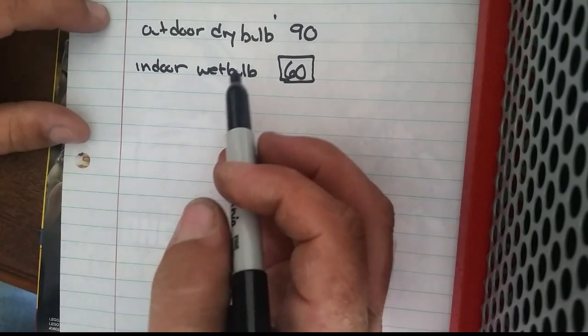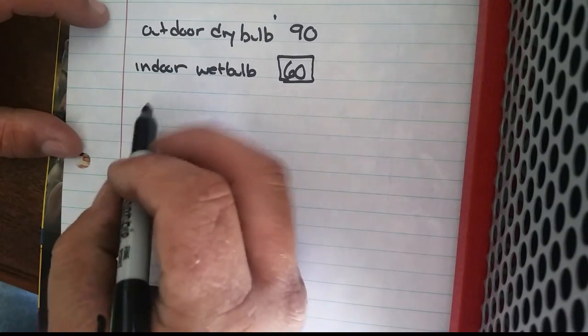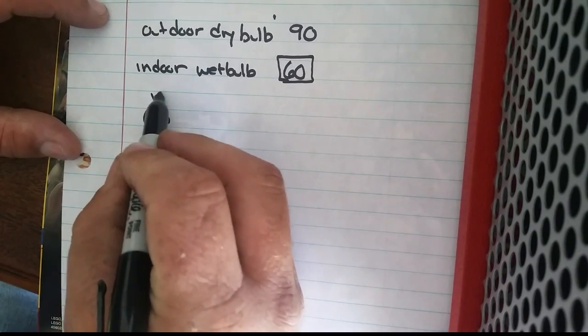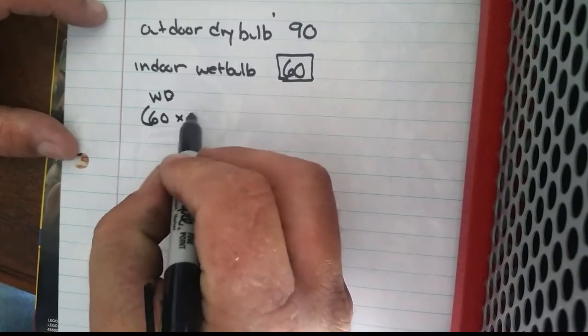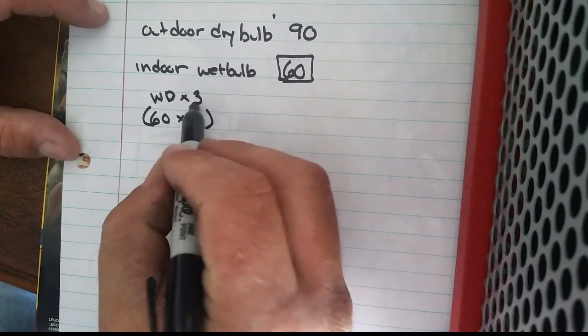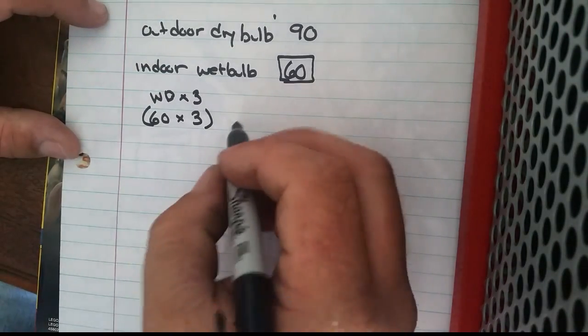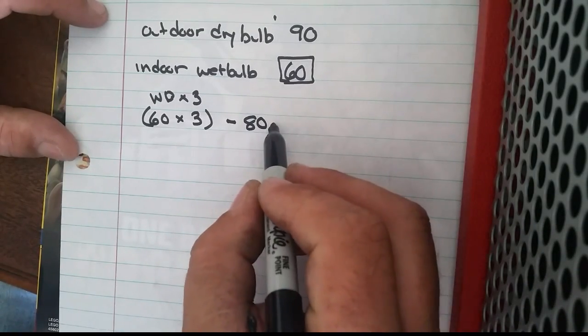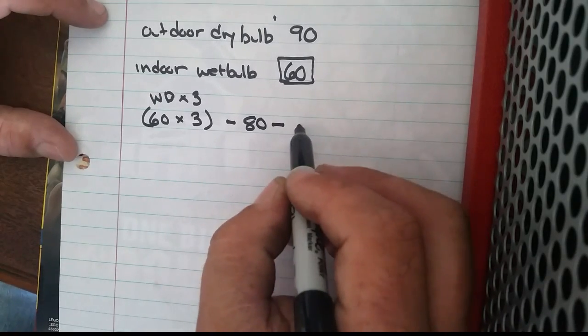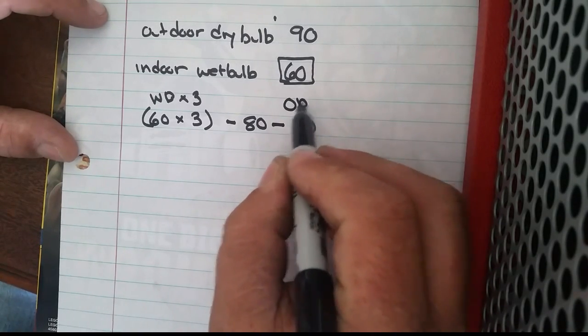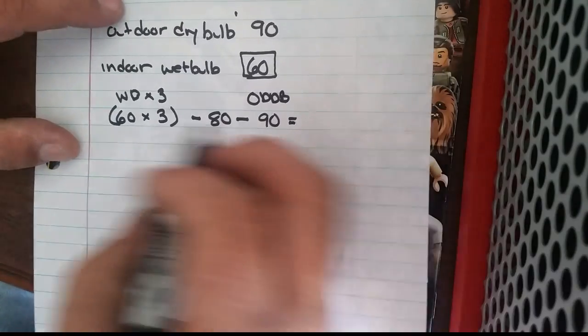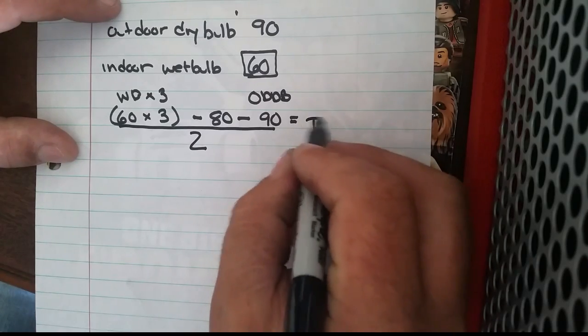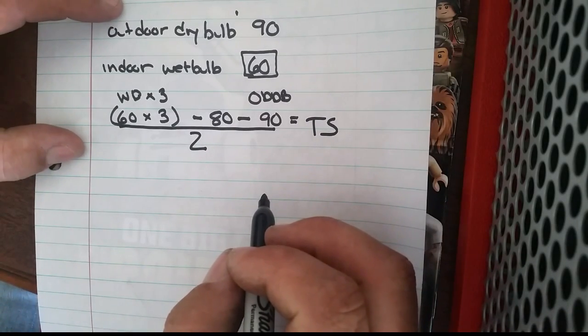So let's put our equation to work. We have 60, which is our indoor wet bulb, multiplied by 3, minus 80, which is a constant that will never change, minus our outdoor temperature which is 90, which is outdoor dry bulb. That will equal our target superheat after we divide this whole thing by 2.